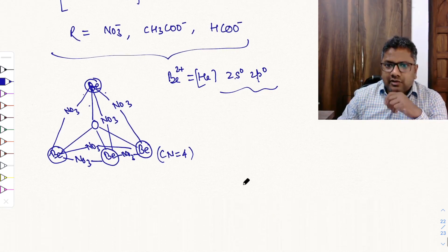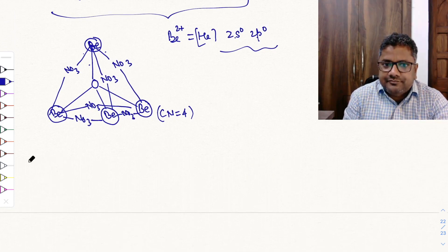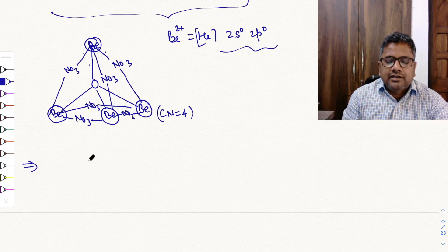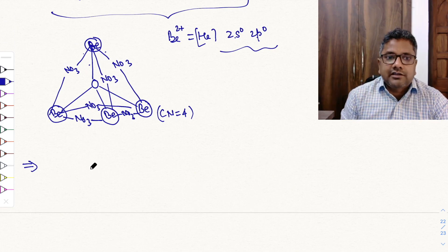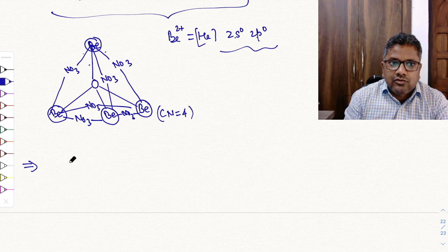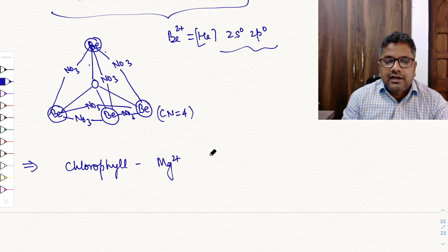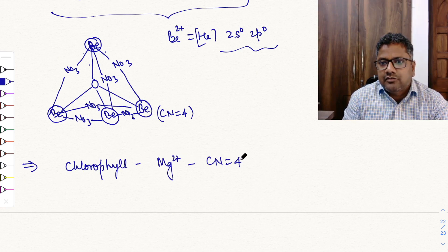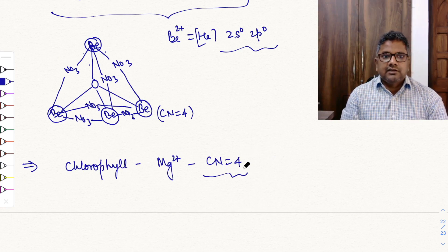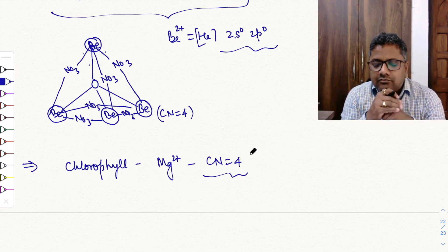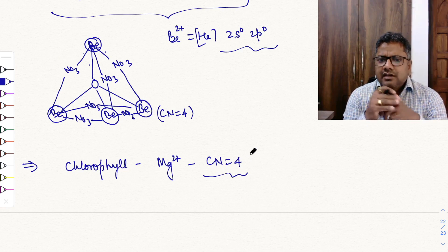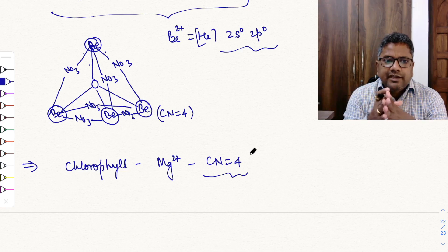Magnesium also forms some complexes. The most important is chlorophyll, which contains Mg2+ with a coordination number of 4. Calcium, strontium, and barium do not have the tendency to form complexes.